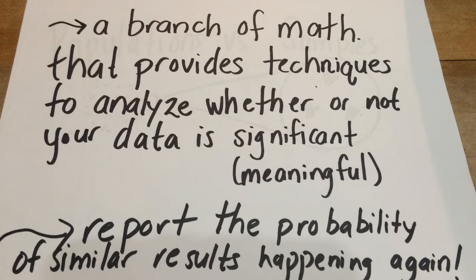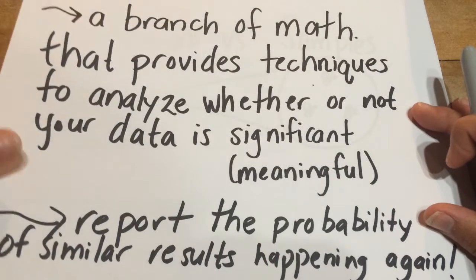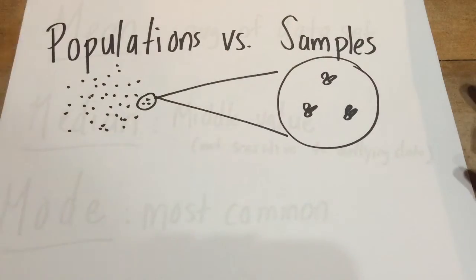Now, statistical applications are based on probability statements. We don't prove anything with statistics, but statistics report the probability that similar results would occur if we repeated the experiment again, which is really key in science. So keep that in mind as our definition as we move forward. Now we're going to look at a few different formulas and techniques we can use or will be using commonly in our AP Biology class. So feel free to pause at any time to take notes.